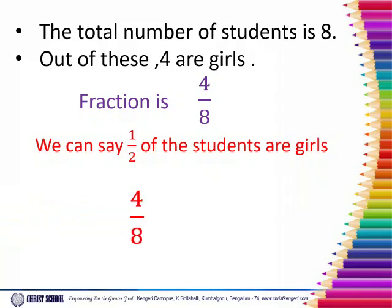4 by 8 is reduced: 4 ones are 4, 4 twos are 8.